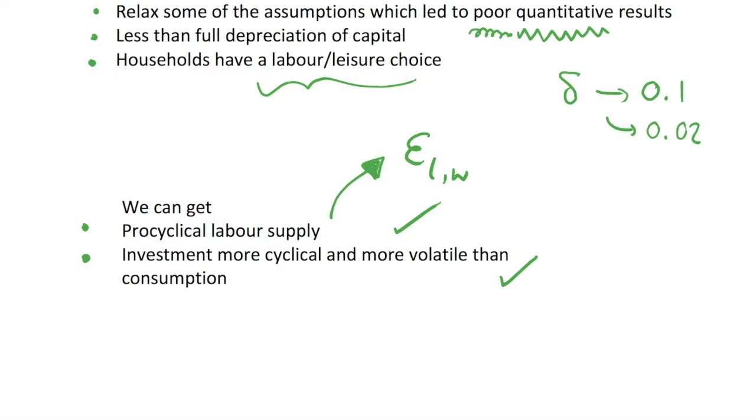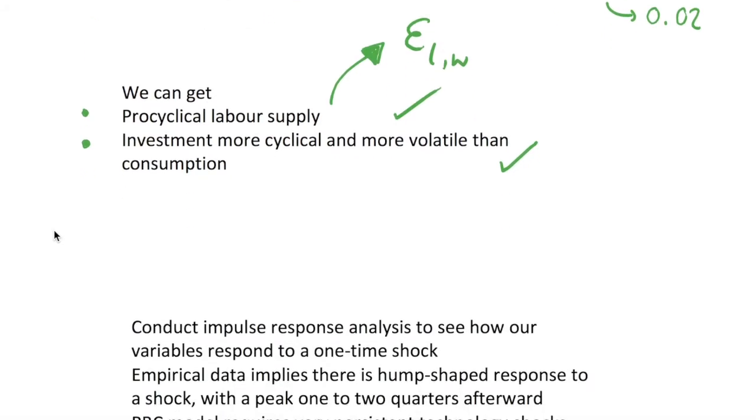But the fact is that to get this procyclical labor supply we do seem to require a very strong and unrealistic assumption of the elasticity of labor if this is the only thing we add to the model. Of course, there are further things we can add to the model, and we'll get onto that in the future with new Keynesian models and a whole next generation of models that are being developed more recently.